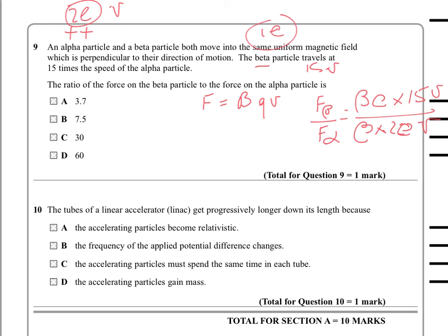So the top line is going to simplify to 15ev, and the bottom line is 2ev, because the Bs will cancel, these Bs will just cancel out, and the es will cancel out, and you get the vs canceling out, and you get 15 over 2, which is 7.5.